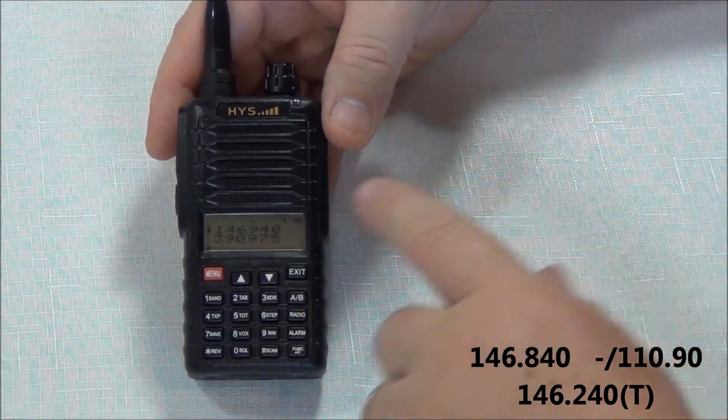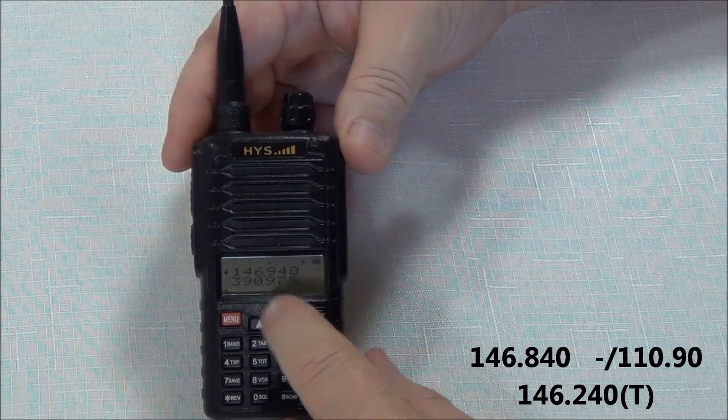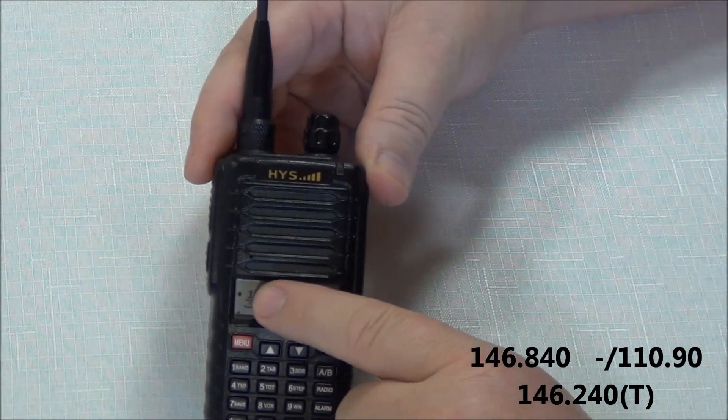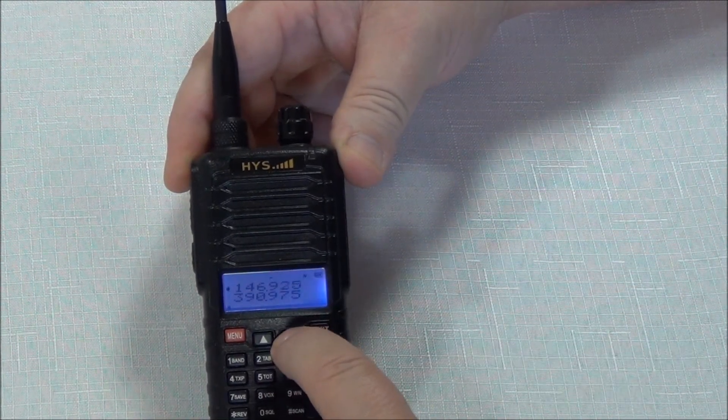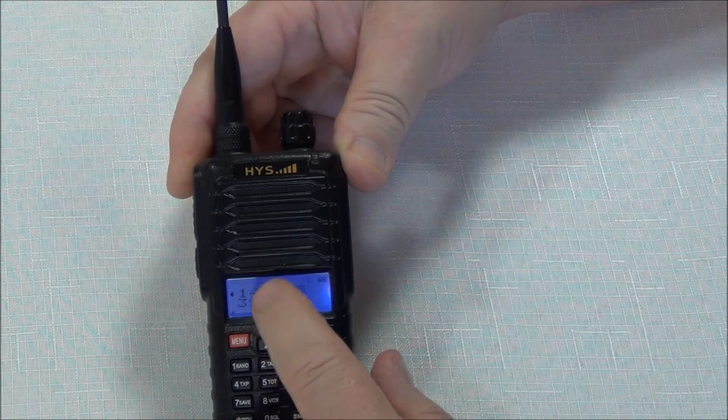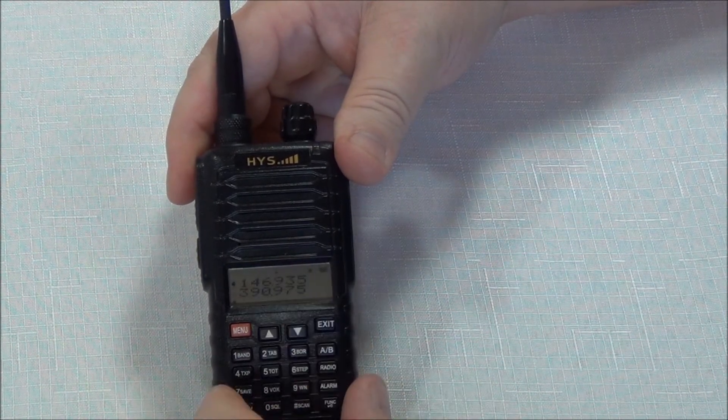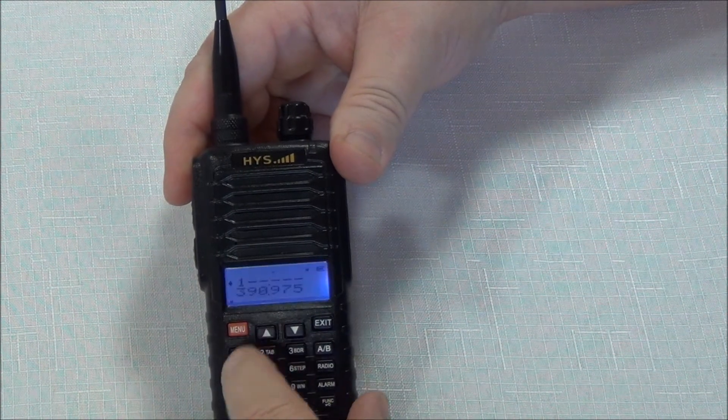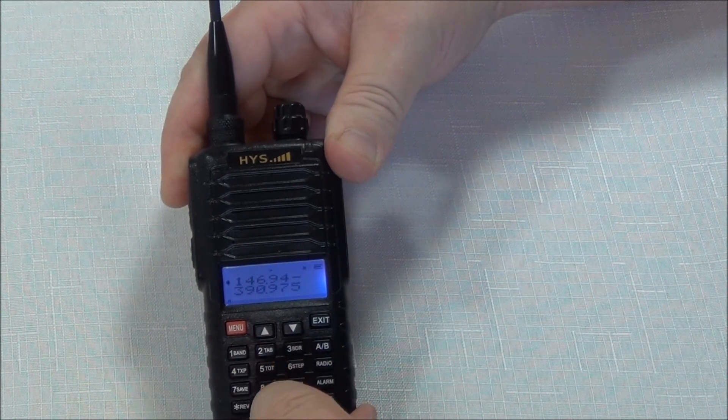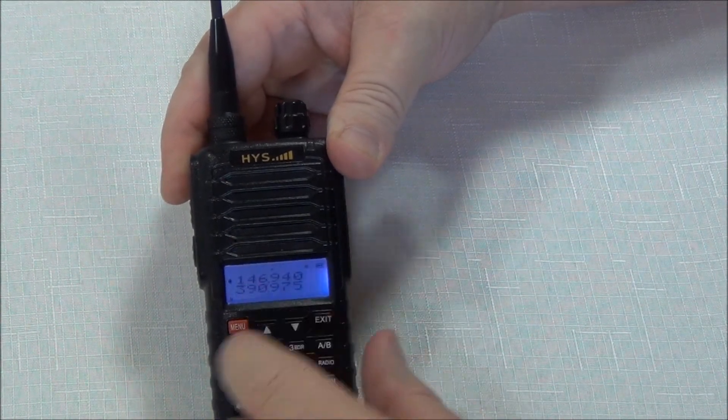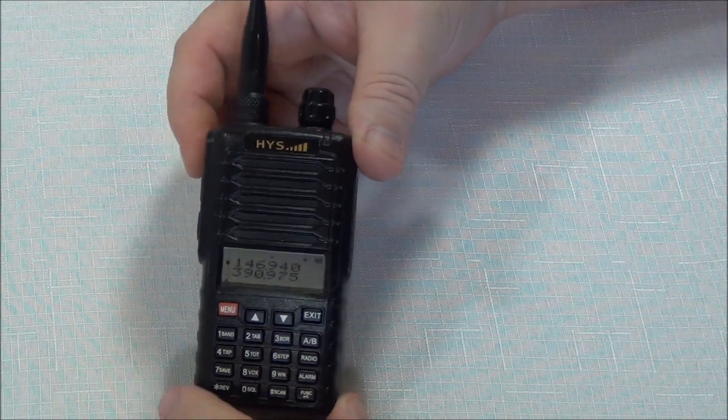First of all, let me talk to you about getting to the frequencies. Now, in this particular radio, you just simply, once you're on the band, there's a little arrow here. Once you're on the band that you want, you just simply up and down until you get to the frequency you want. Or you can type it in. Let's go back to 146.940. This is a little one. 146.940. Okay, 146.940. So you can use the up and down arrows or you can just type in the frequency either way you wish.